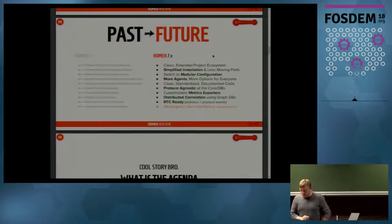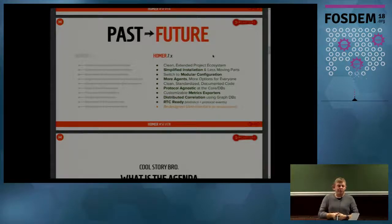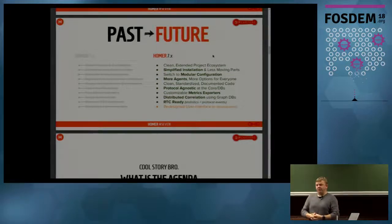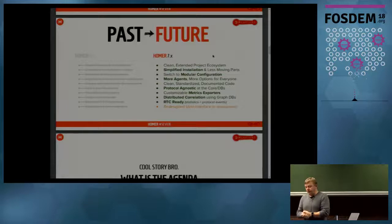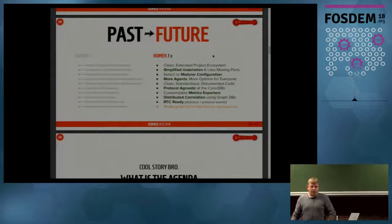What is HOMER 7 exactly? In HOMER 5 we had some features which are now deprecated. In HOMER 7 we completely redesigned the system. We simplified installation, removed parts that are no longer needed, switched to modular configuration, added more agents, and more possibilities to capture data and store it in HOMER. We wrote new documentation, new protocol-agnostic core, and so on. We also have distributed correlation using external time-series databases, readiness for RTCP and WebRTC stuff, and of course a new interface which is still in development.